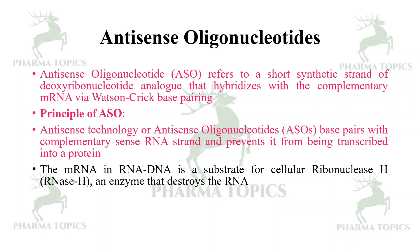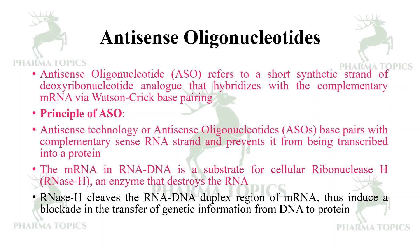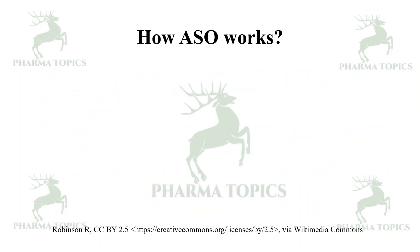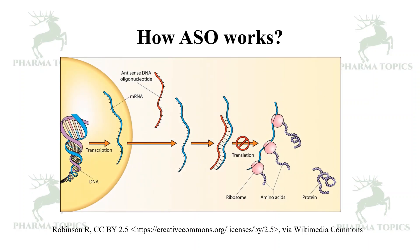The mRNA in an RNA-DNA duplex is a substrate for the cellular ribonuclease H (RNase H) enzyme — an enzyme that destroys the RNA. RNase H cleaves the RNA-DNA duplex region of mRNA, thus inducing a blockade of transfer of genetic information from DNA to protein.